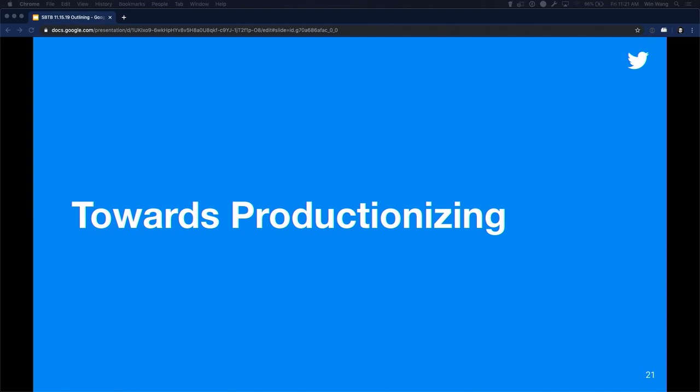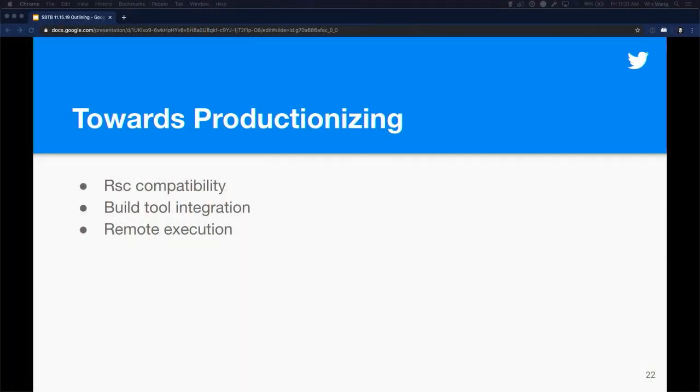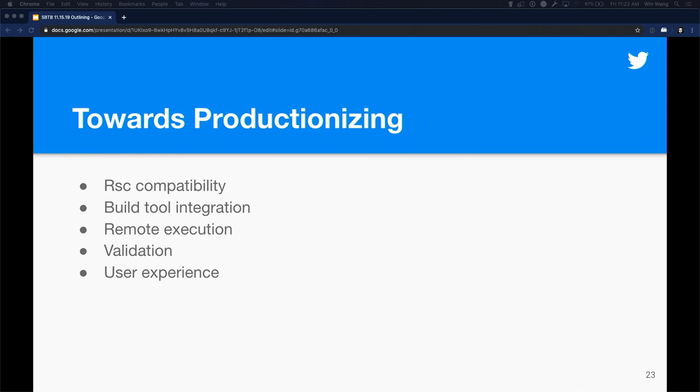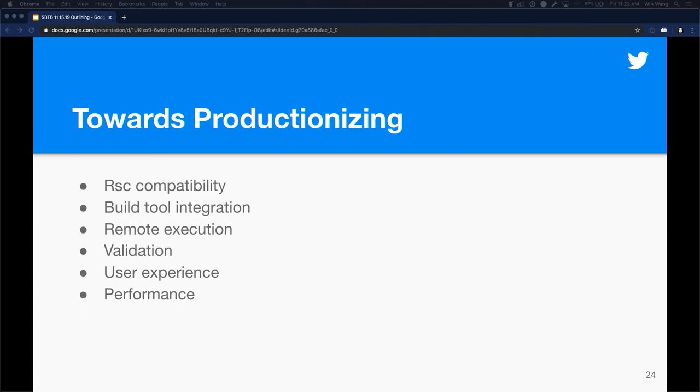So how do we actually ship? This focuses on RSC and the challenges we had in shipping an outliner. These are the three ingredients from Stu's talk: RSC compatibility with explicit result types, handling macros, and the build tool understanding how to invoke the outliner and compiler in the correct order. Plus remote execution or a sufficiently large box. But when shipping, you also have validation issues and user experience issues. And remember — the goal of all this was performance: you're supposed to actually deliver value to your users.